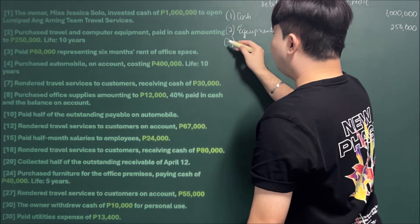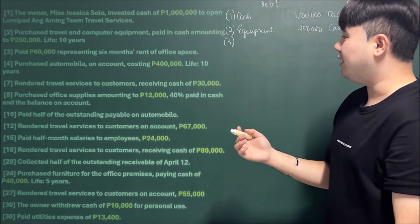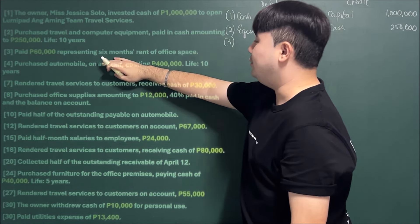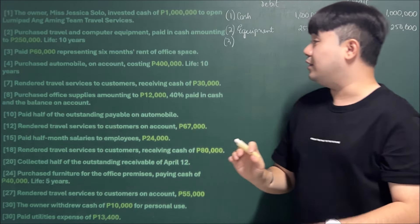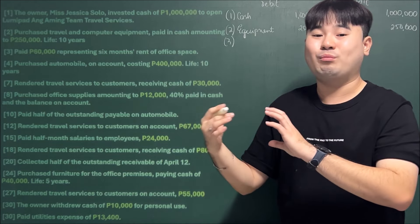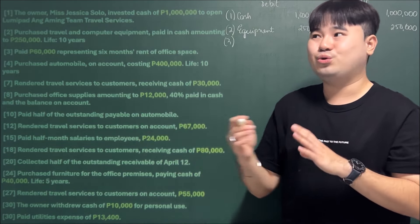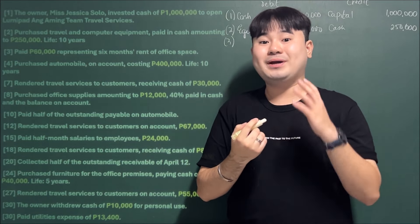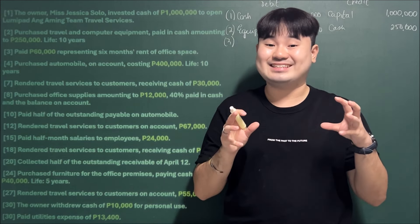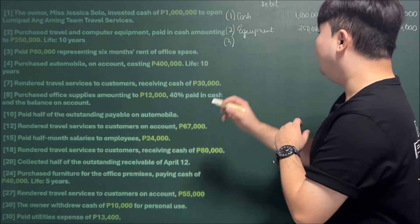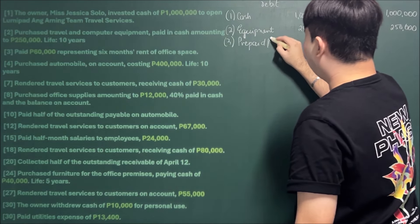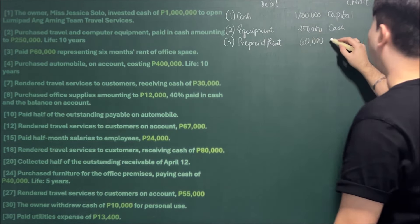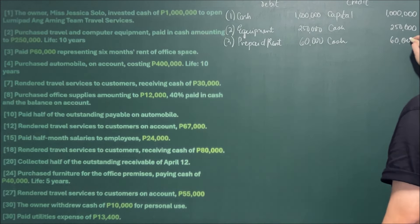Number three, April 3: Paid 60,000 representing six months of rent for office space. Since the entire six months was paid in advance and not yet used, it's not yet a rent expense directly. We can record it as an asset — Prepaid Rent. So we debit Prepaid Rent for 60,000 and credit Cash for 60,000.